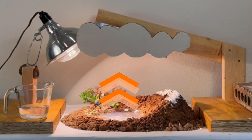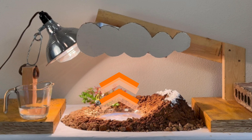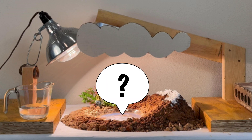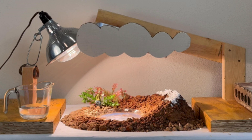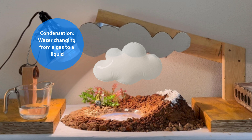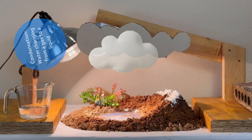Now the thing about water vapor is that it's invisible to the human eye. So you may be wondering how do we know that there's actually water vapor rising in the model. Well, I can prove it to you, but in order to prove it we have to go to the next big step in the water cycle, which is condensation.